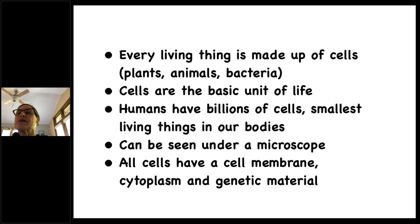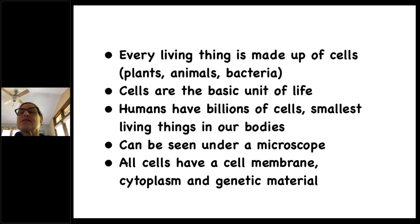Every living thing is made up of cells — plants, animals, and bacteria. Cells are the basic unit of life. Humans have billions of cells; they're the smallest living things in our bodies and can only be seen under a microscope. All cells have three things: a cell membrane, cytoplasm (the gel in the cell), and genetic material.